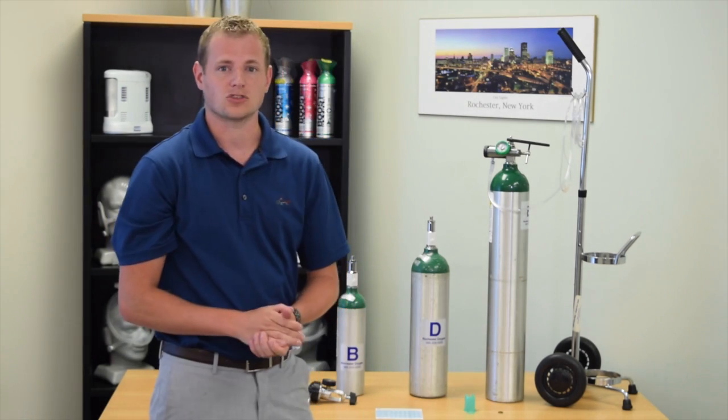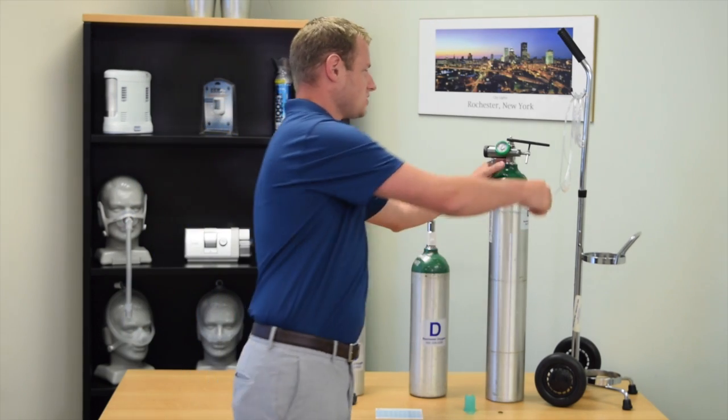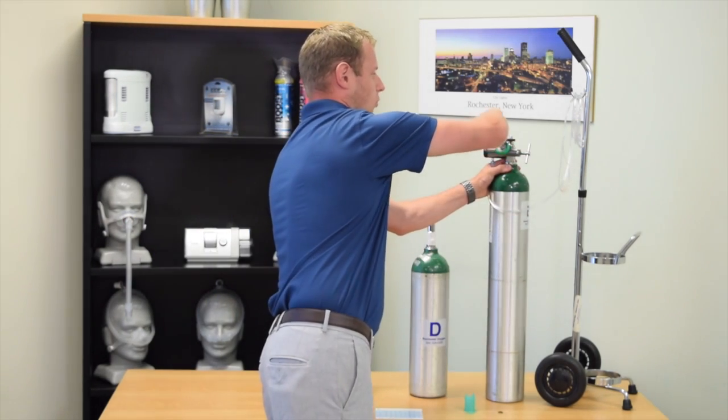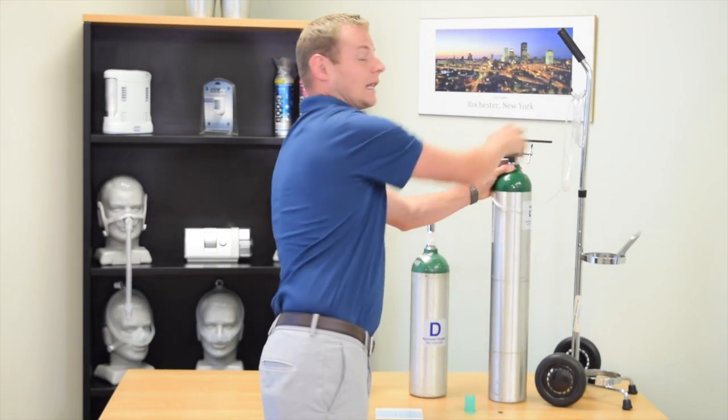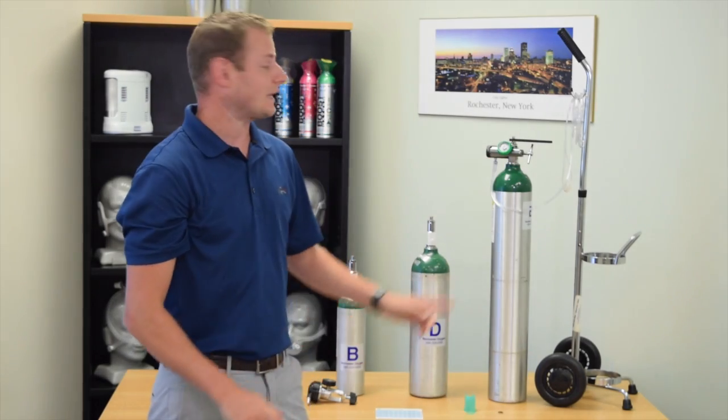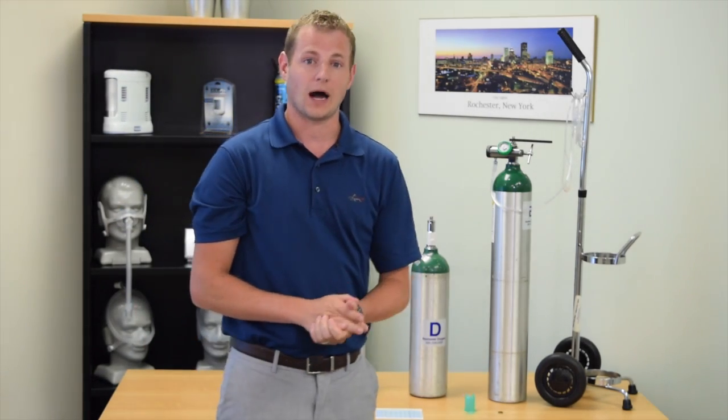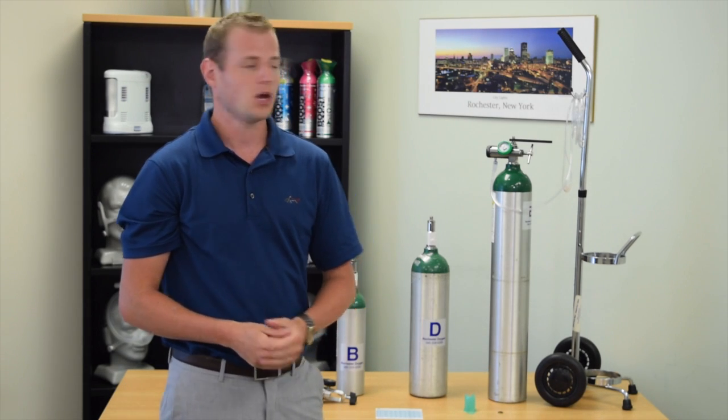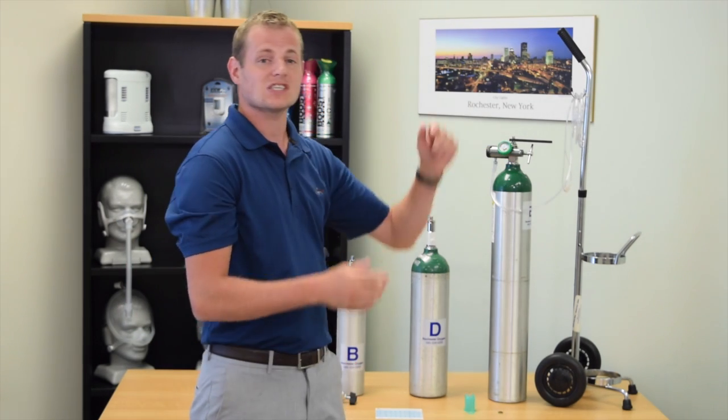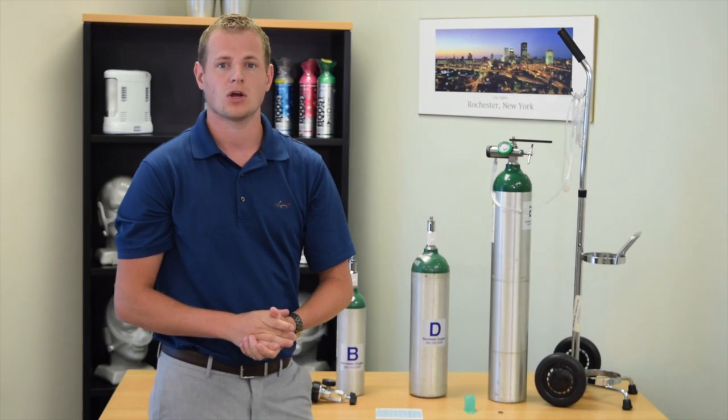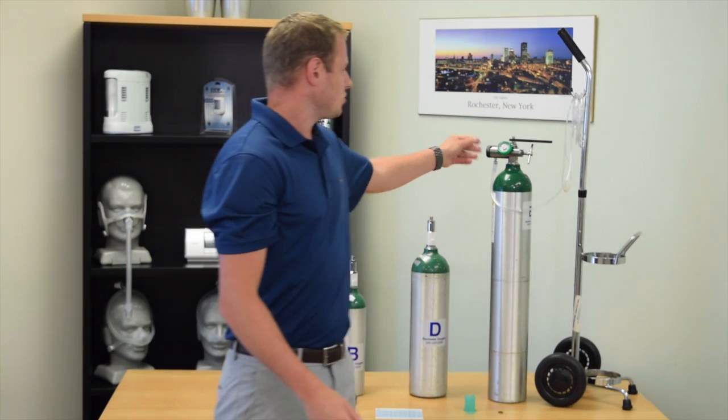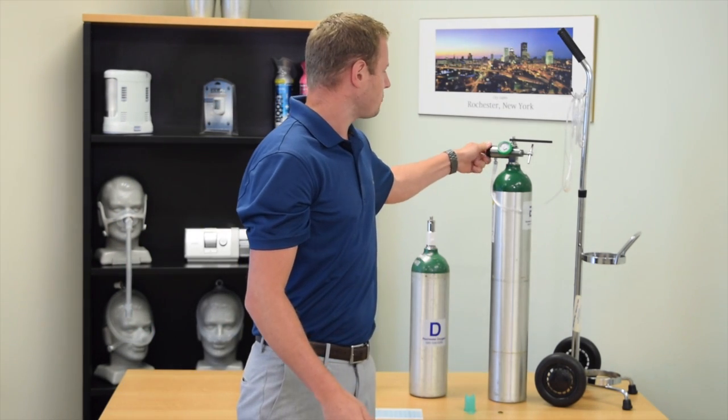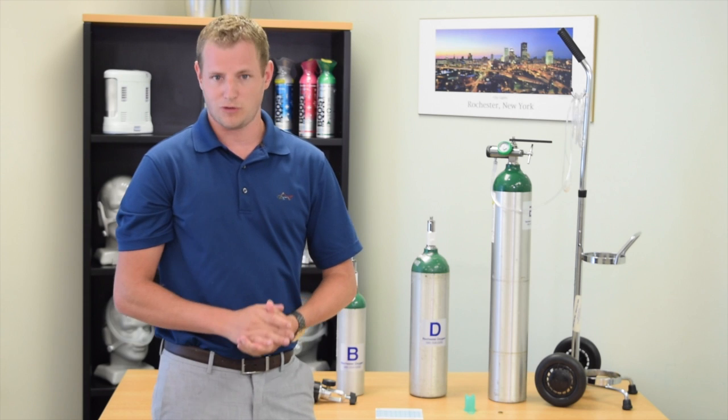When you are done using the oxygen, you can simply twist your tank wrench one full rotation in the clockwise direction, but leave your liter flow on to allow the oxygen to bleed through the regulator. Once your regulator dial reaches the red zero mark, you are then safe to turn your dial to the off position and remove your regulator.